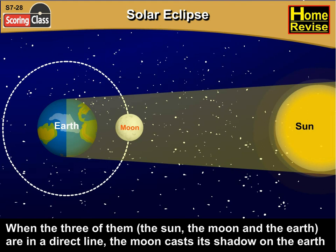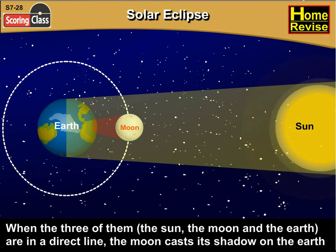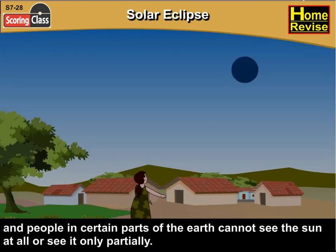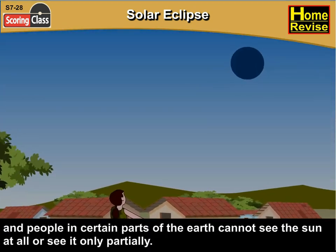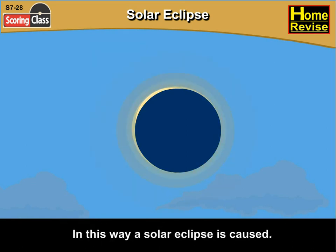When the three of them — that is, the sun, the moon and the earth — are in a direct line, the moon casts its shadow on the earth and people in certain parts of the earth cannot see the sun at all, or see it only partially. In this way, a solar eclipse is caused.